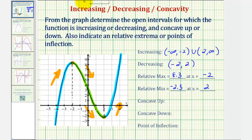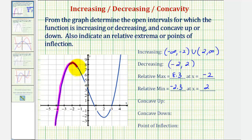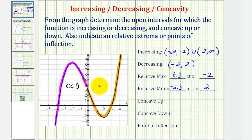Now let's talk about the concavity. Looking at the left side of the graph, notice how this piece is concave down, and it seems to change concavity right at the y-axis. On the left the function is concave down and on the right the function is concave up. We're going to say it changes concavity right at x equals zero. So the function is concave up over the open interval from zero to infinity.